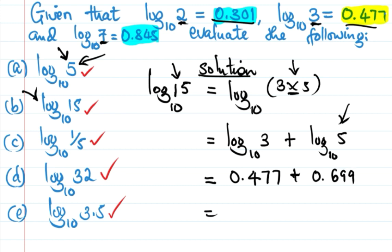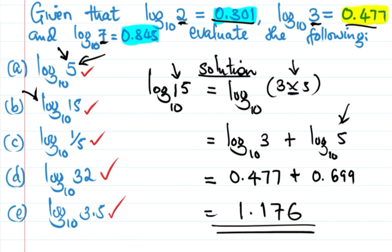So 0.477 plus 0.699 gives us 1.176. That is our answer for log 15. You can verify this on your calculator by computing log of 15.